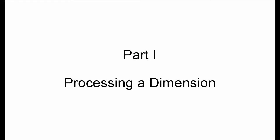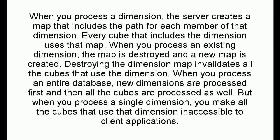Part 1: Processing a Dimension. When you process a dimension, the server creates a map that includes the path for each member of that dimension. Every cube that includes the dimension uses that map. When you process an existing dimension, the map is destroyed and a new map is created. Destroying the dimension map invalidates all the cubes that use the dimension.